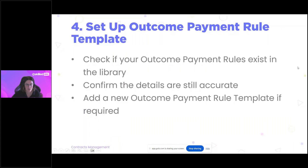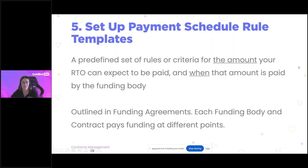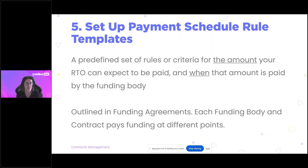The next setup item is the Payment Schedule Rule Template. This flows on from outcome payment rules and defines the breakdown of how much money is paid and when. This varies between funding bodies and contracts — some states pay based on unit completion, some split payments so there is a payment at unit commencement, potentially another partway through, and another at completion. Some pay based on qualification milestones, such as every time a student completes three new units. Setting up your payment schedule rules defines all of these triggers.